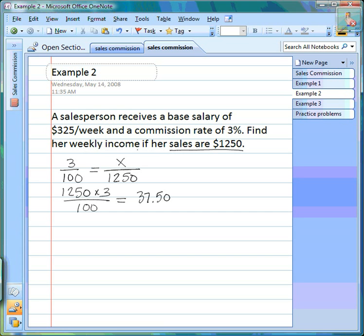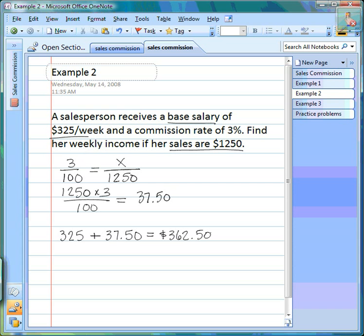Now the question says find her weekly income. So if we go back to the beginning of the question, it says a salesperson receives a base salary of $325. So we need to take her base salary, $325, add it to the commission that she makes, and find the total that she makes is $362.50. This is an amount of money, so make sure that you label these problems with a dollar sign.